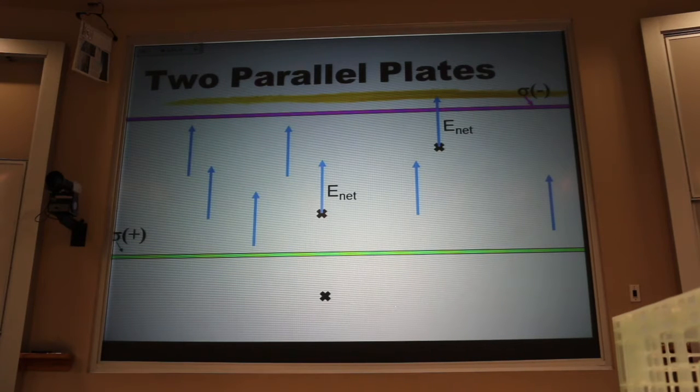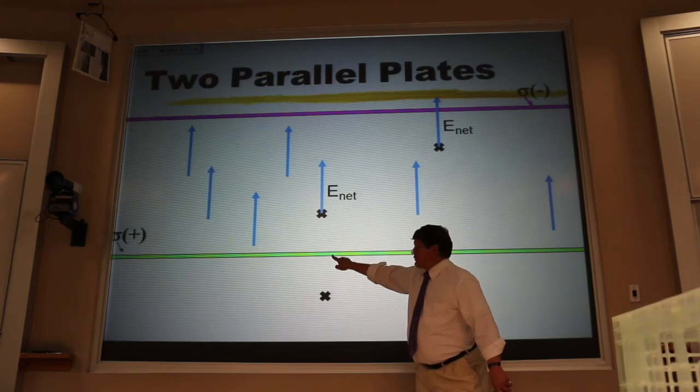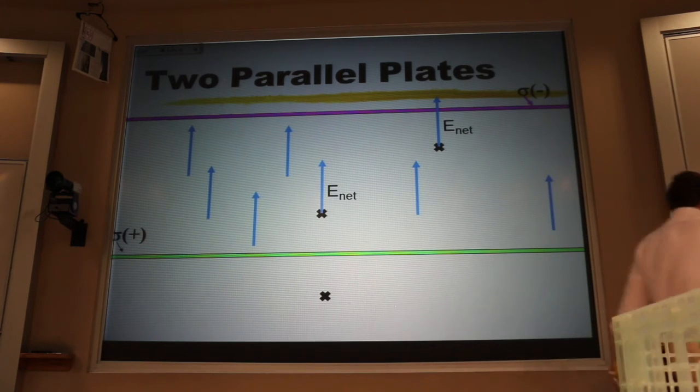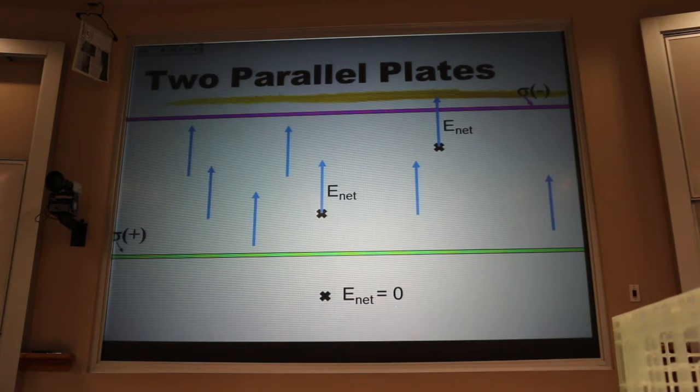Now if I look outside the sheets, I have a contribution due to the positive sheet that's away from the positive and towards the negative. Again, distance doesn't matter, so these two are the same size and cancel.